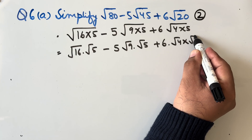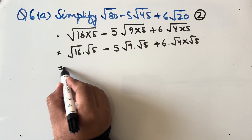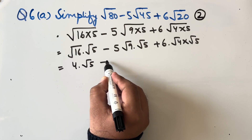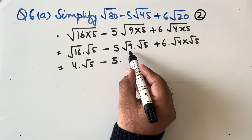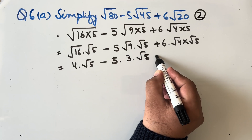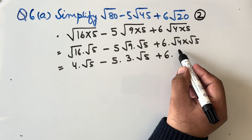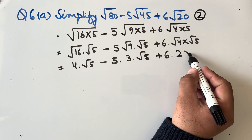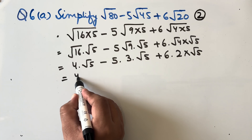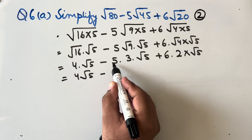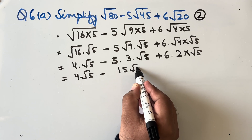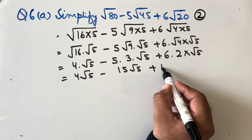Now √16 is 4, so we get 4√5. Minus 5 × √9, which is 3, × √5. Plus 6 × √4, which is 2, × √5. This gives us 4√5 − 5 × 3 = 15√5, plus 6 × 2 = 12√5.